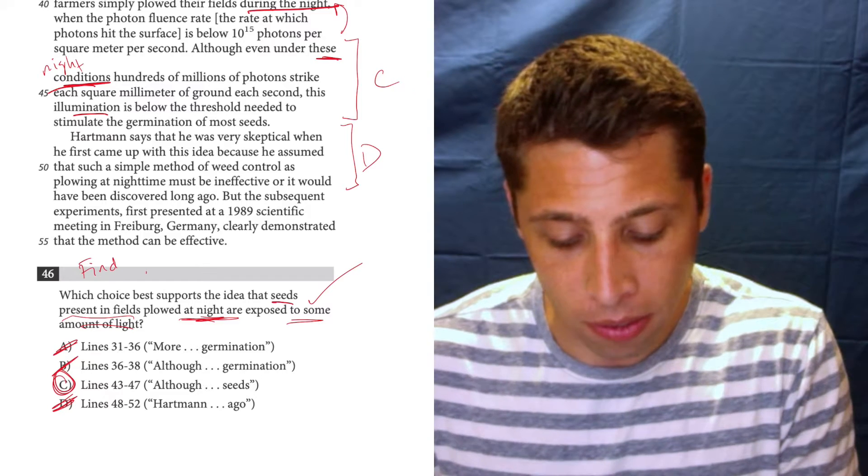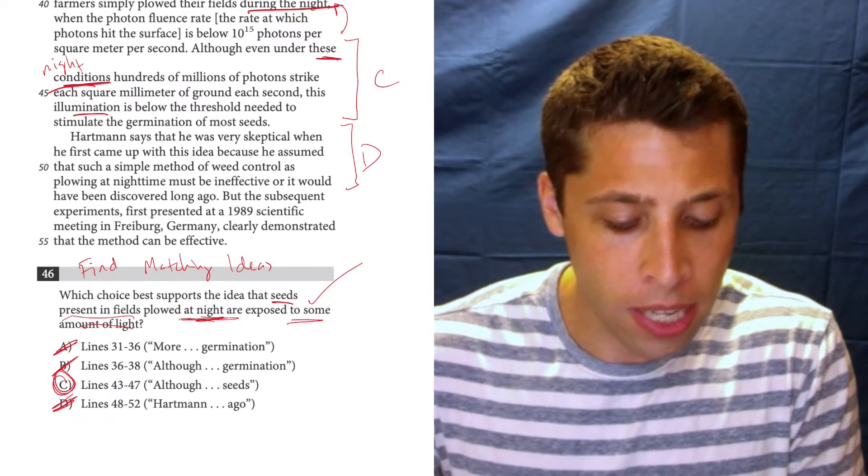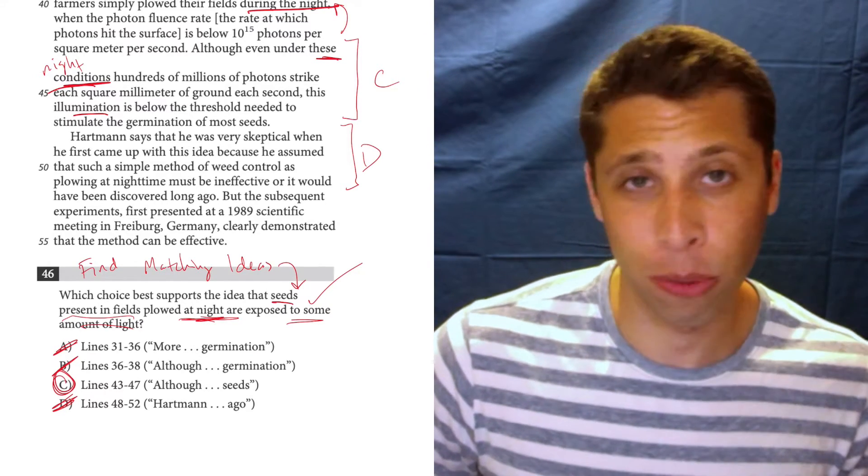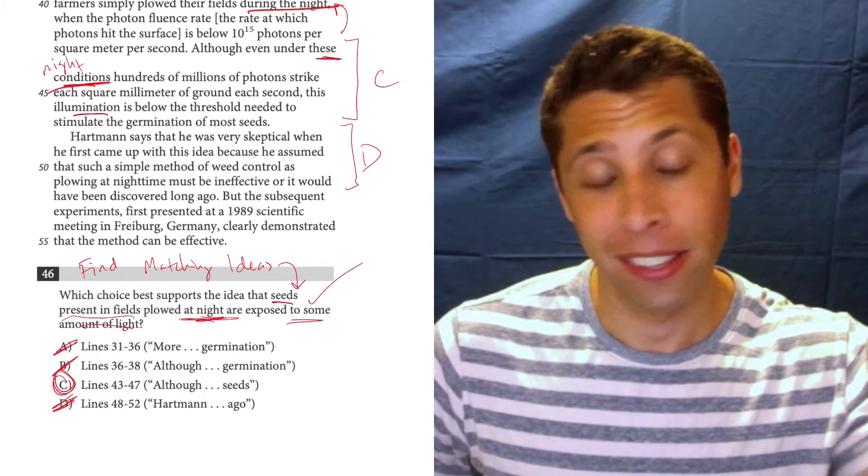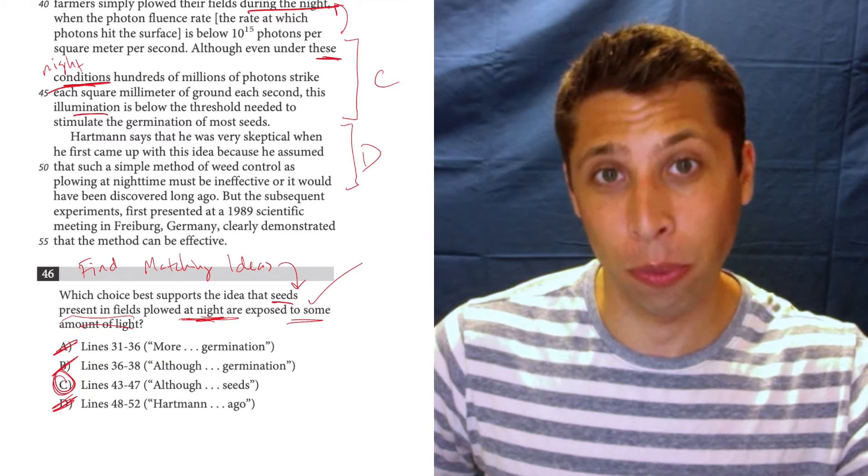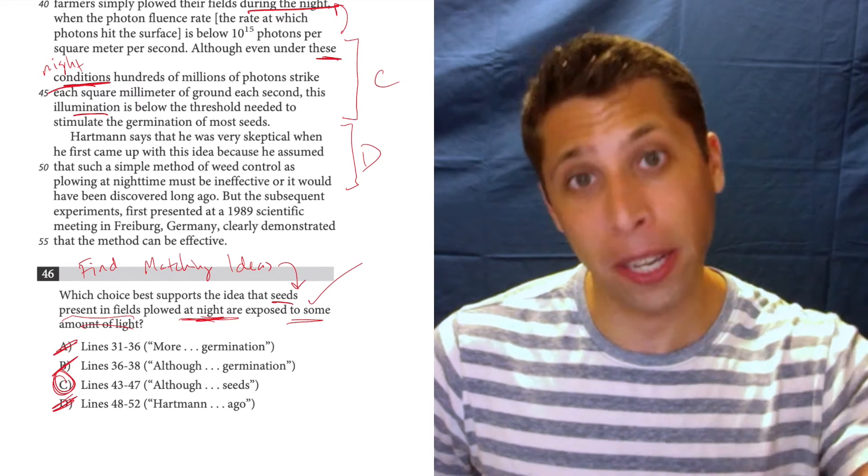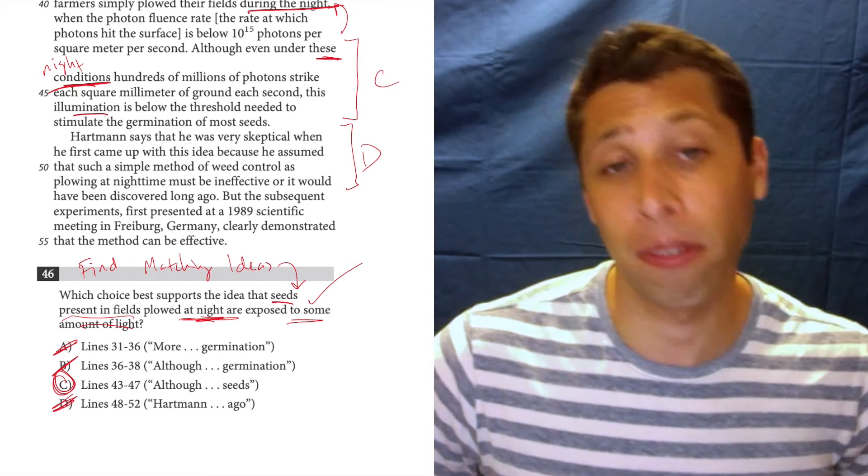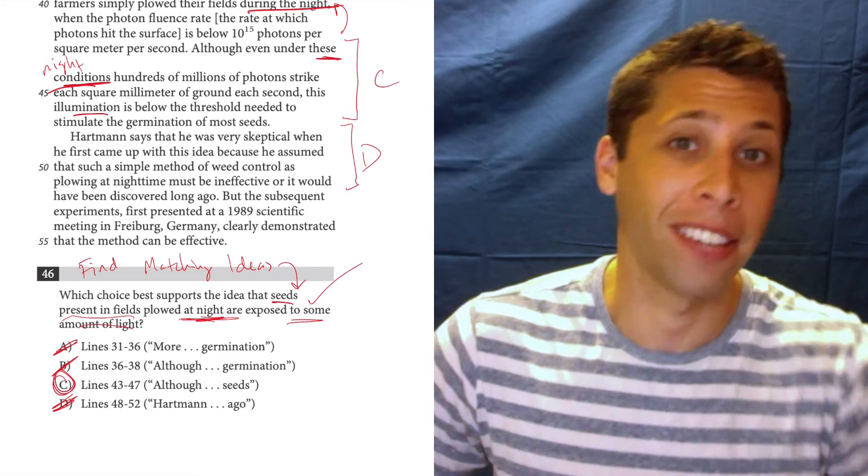And that's really all we're doing with these, is we are finding matching ideas. The key is to be very clear up front what ideas you need to match with. If you're just diving into those line references kind of empty-headed, you're going to have trouble sorting through all this weird science stuff. But if you have goals, if you take the question, pick it apart, and turn it into things that you're looking for, suddenly those line references are going to make a lot more sense. And that's what we did, and that's how we got the answer.